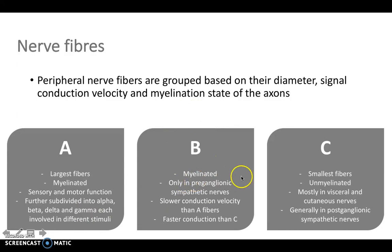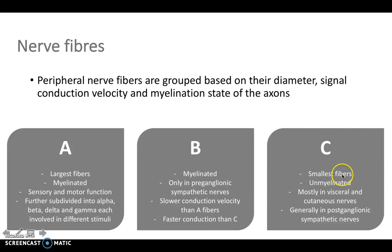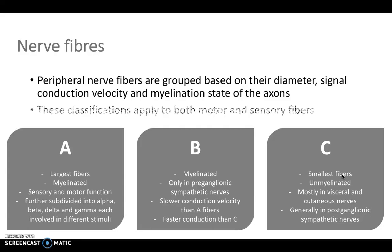B fibers are myelinated as well, and these are only in preganglionic sympathetic nerves. They're slower at conducting velocity than A, but faster than C. C fibers are the smallest fibers; they're unmyelinated, mostly in visceral and cutaneous nerves, and they're actually quite slow at conducting, particularly in comparison to fibers A and B.